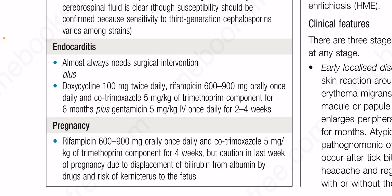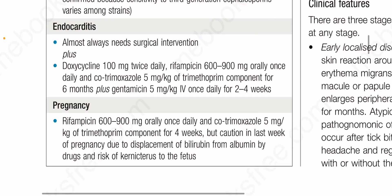Endocarditis almost always needs surgical intervention, plus doxycycline 100 mg twice daily, rifampicin 600 to 900 mg orally once daily, and co-trimoxazole 5 mg/kg of trimethoprim component for six months, plus gentamicin 5 mg/kg IV once daily for two to four weeks. In pregnancy: rifampicin 600 to 900 mg orally once daily and co-trimoxazole 5 mg/kg of trimethoprim component for four weeks — but with caution in the last weeks of pregnancy due to displacement of bilirubin from albumin and risk of kernicterus to the fetus.